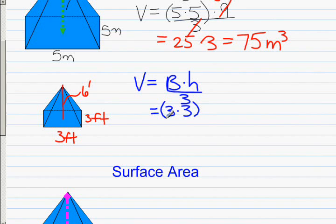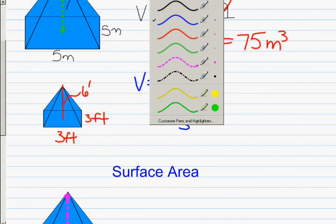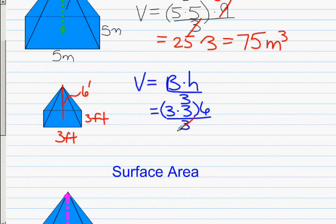Multiply that by the height, which is 6, and divide it all by 3. Go ahead and cross-cancel if at all possible. One 3 will cancel out with another 3, and 3 divided by 3 is 1. We're left with 3 times 6, which is 18, and it's volume, so it's feet cubed.